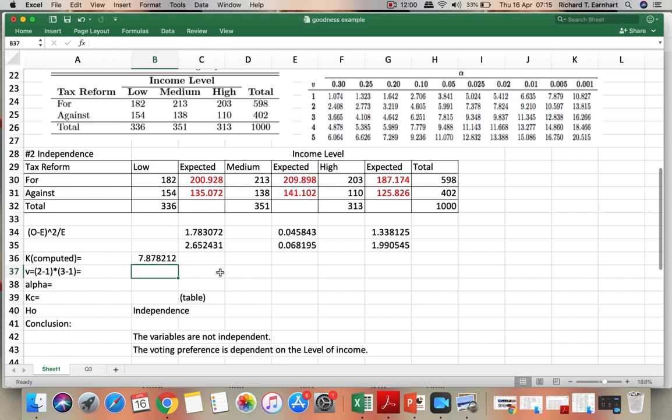For the number of degrees of freedom, we have two rows and then three columns. So two minus one, three minus one, we have two. Your alpha is 0.05. And then using the critical value, two and then under 0.05, we have 5.991.